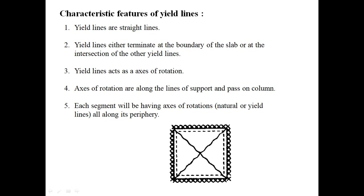The slab segment rotates against three axes. Fifth, each segment will have an axis of rotation — natural or yield lines — along its periphery. This negative yield line is present for the rotation of all segments. All four segments rotate against this negative yield line as well. These are the characteristic features of yield lines to remember while designing or analyzing.